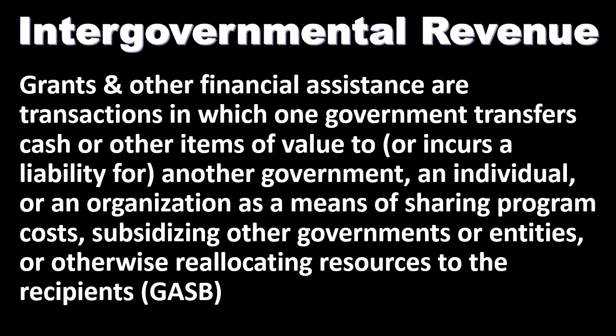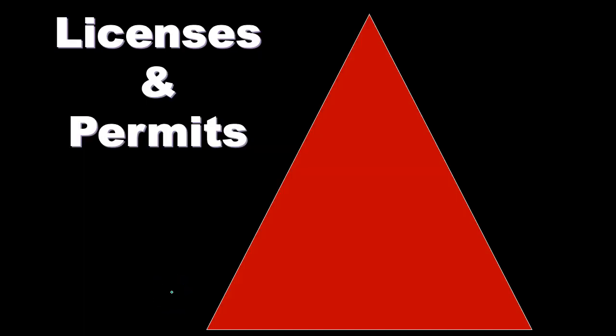Intergovernmental revenues — grants and other financial assistance — are transactions in which one government transfers cash or other items of value to, or incurs a liability for, another government, an individual, or an organization, as a means of sharing program costs, subsidizing other governments or entities, or otherwise reallocating resources to the recipients. That is per GASB.